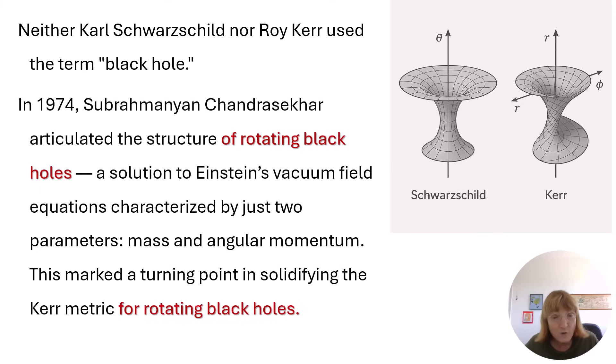In 1974, Subrahmanyan Chandrasekhar articulated the structure of rotating black holes—a solution to Einstein's vacuum field equations characterized by just two parameters: mass and angular momentum. This marked a turning point in solidifying the Kerr metric for rotating black holes.